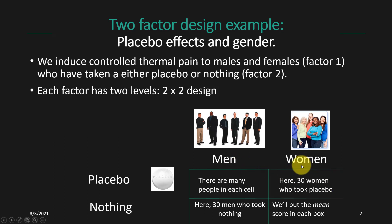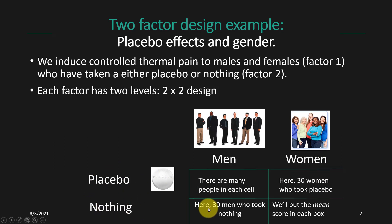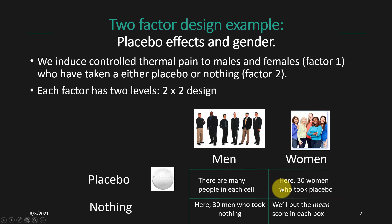Because these are both independent groups of people — we don't have any repeated measures here — all of our men stay in that group, all of our women stay in that group, and for the placebo, you only get the placebo or you only get nothing. So these are independent groups, and in our two by two design we ultimately have four different groups: men who got the placebo, women who got the placebo, men who got nothing, or women who got nothing. You can think about each of these cells as having 30 people randomly assigned, but in the tables we'll just put the mean in each box.